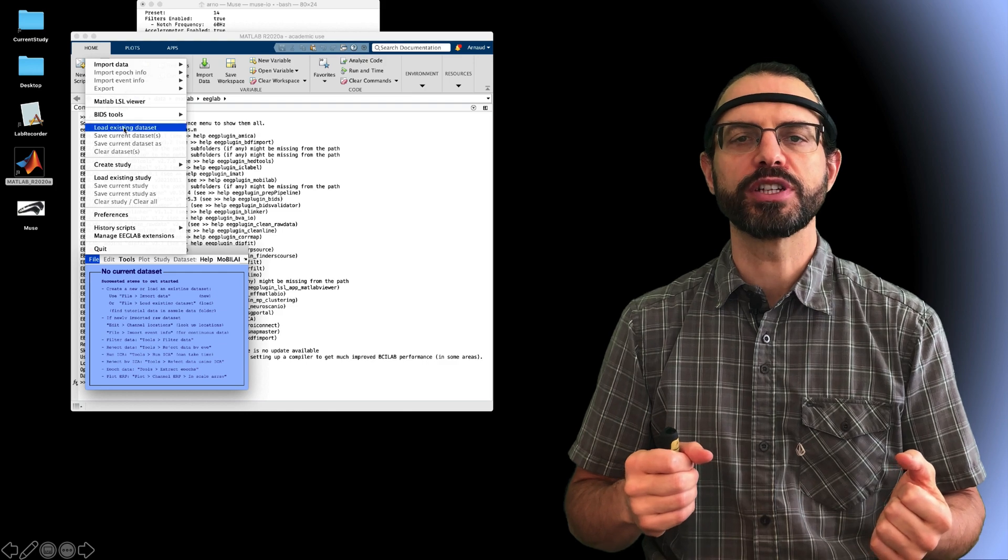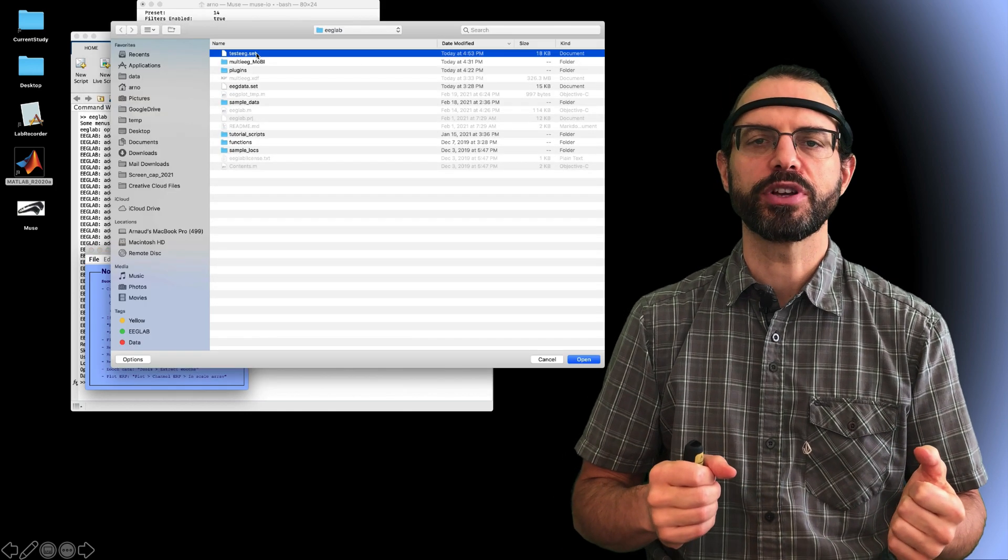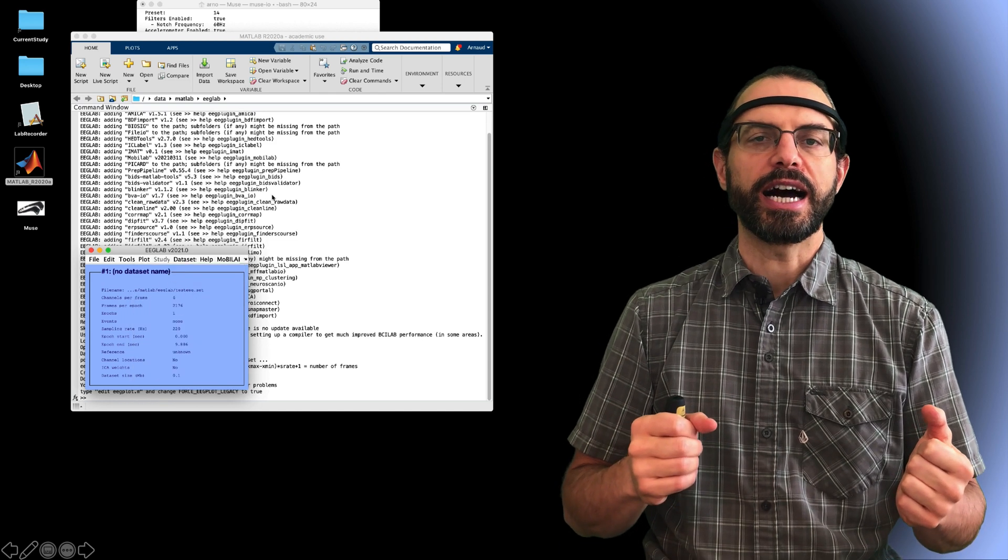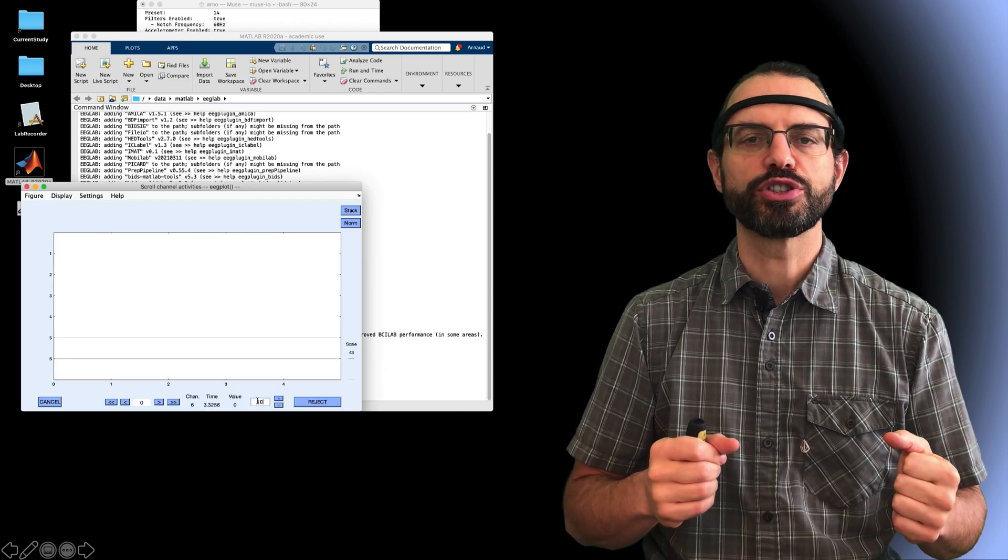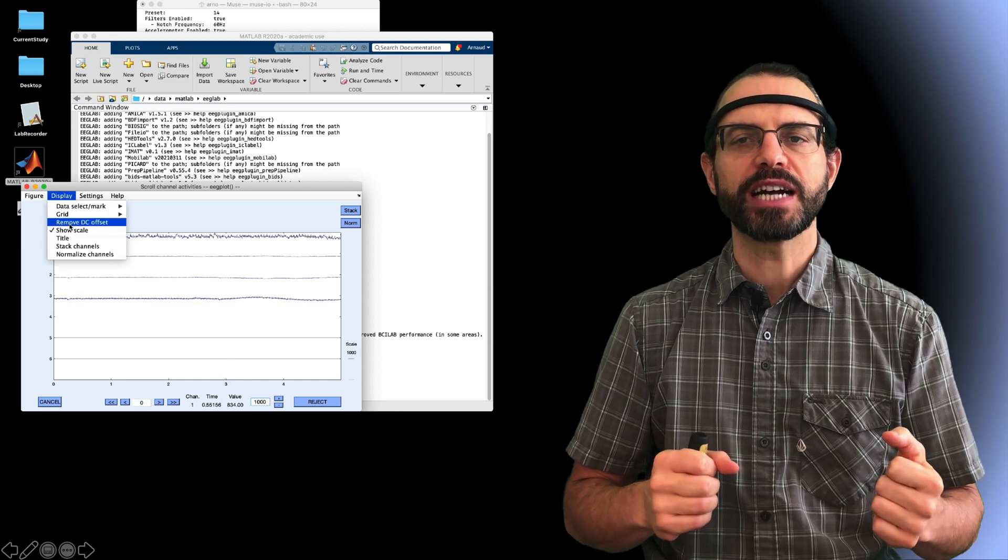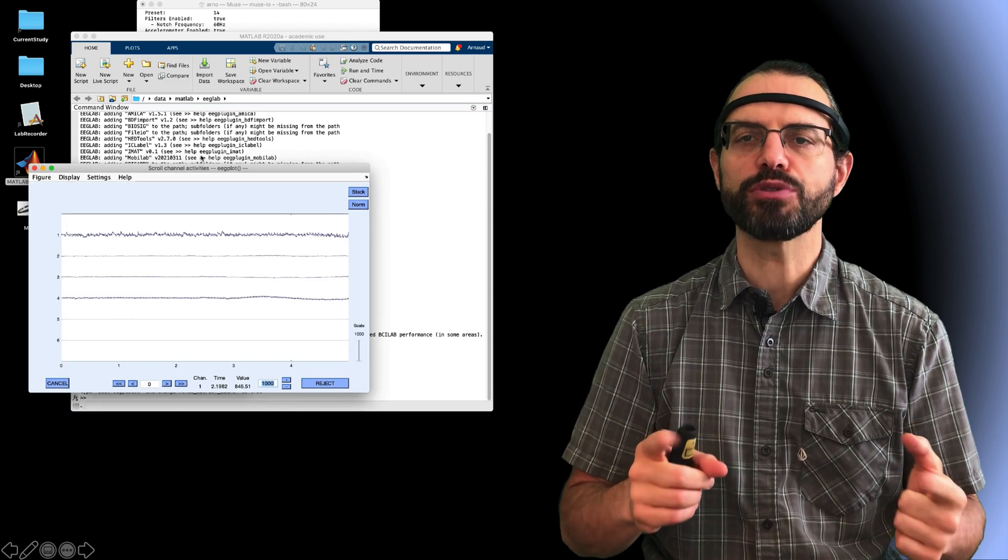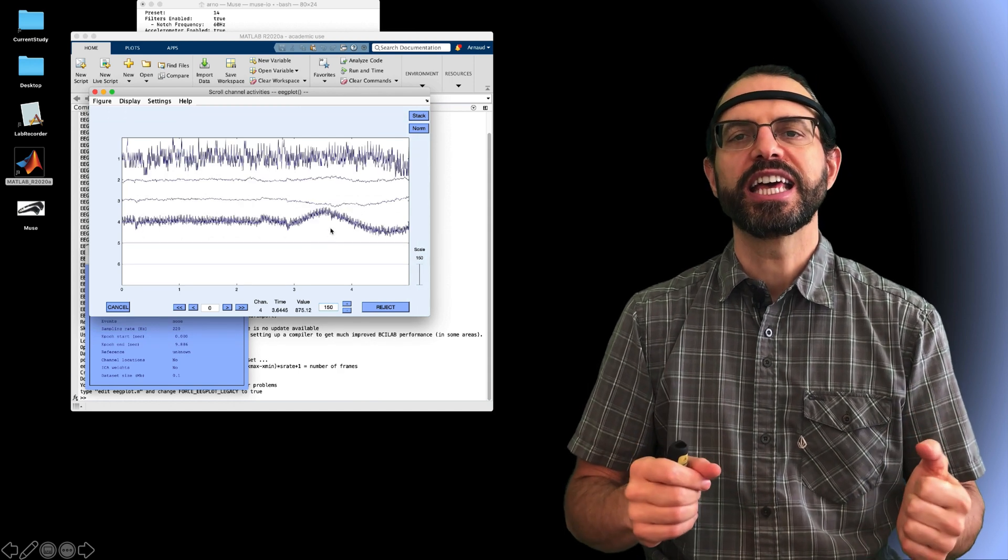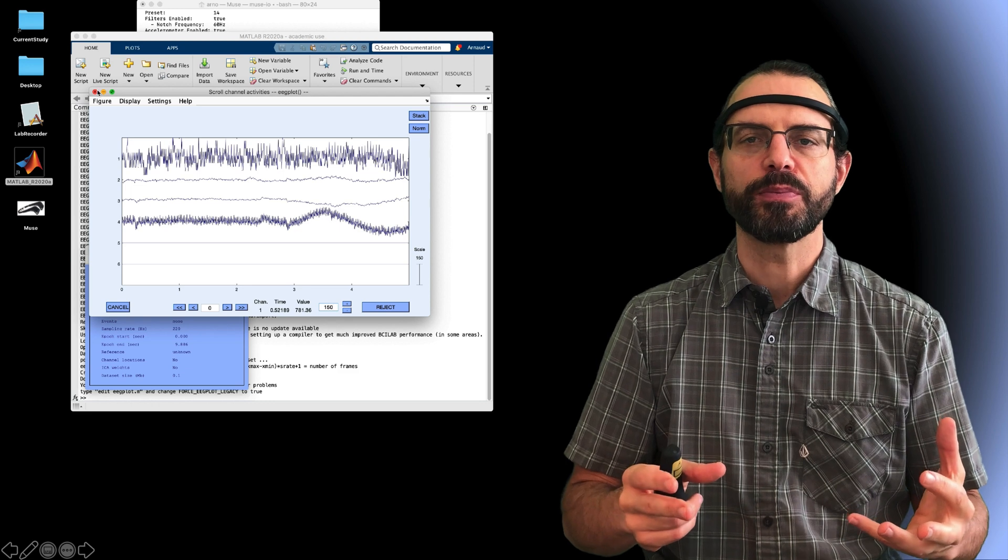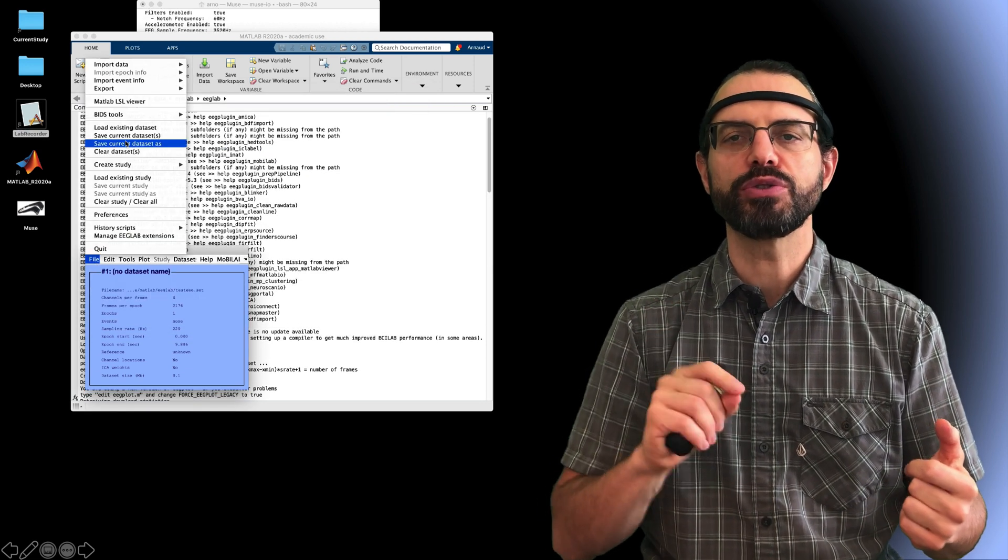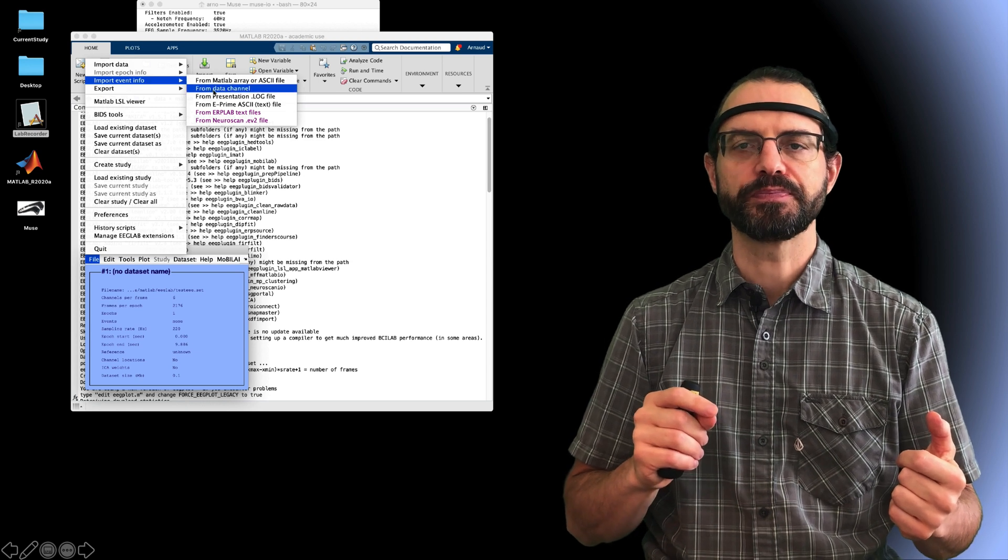And I now have a regular EEGLAB dataset that I can use as I would any other EEGLAB dataset. First, I'm going to load it and then I'm going to plot it. I need to change the scaling and also remove the DC offset. Sometimes you might have the last EEG channel containing event markers. It's not the case here. If I had an event channel, I can use this EEGLAB menu to import events.